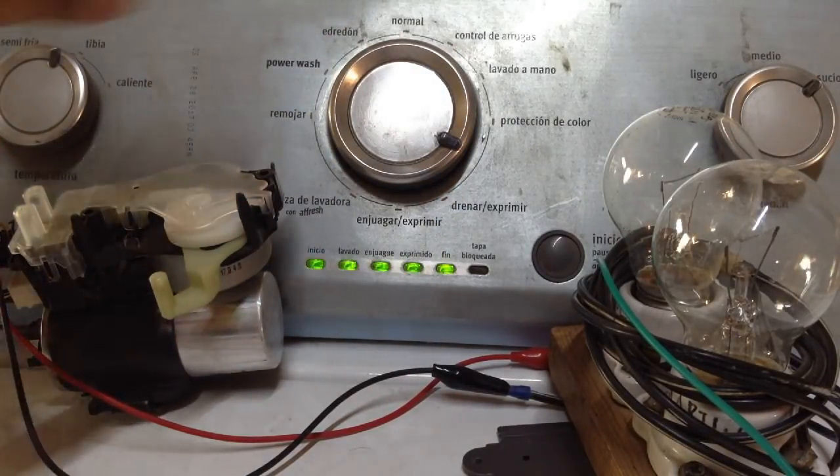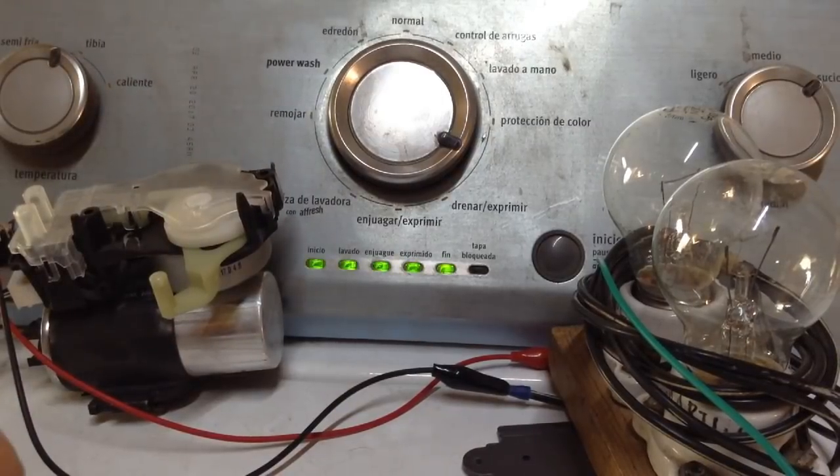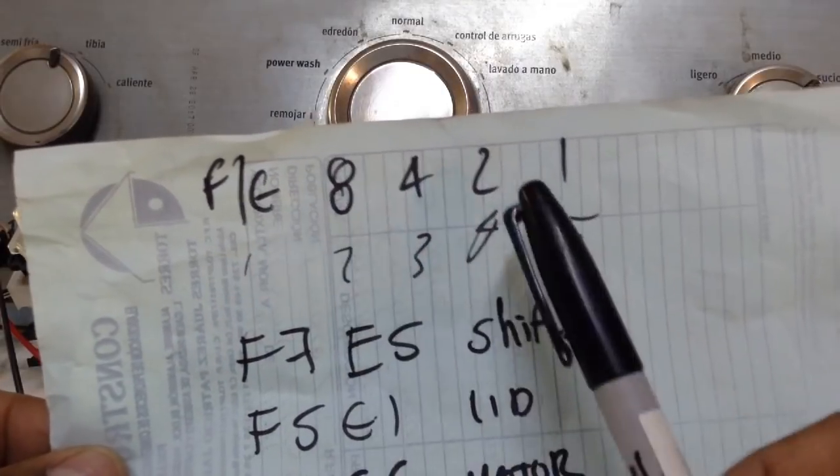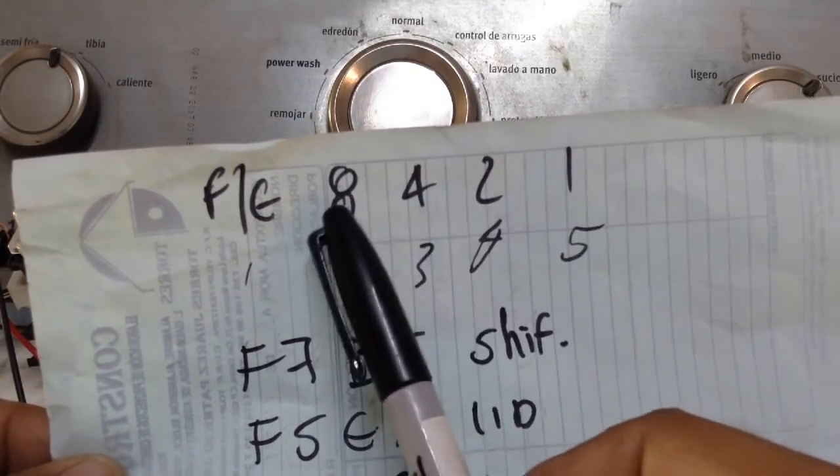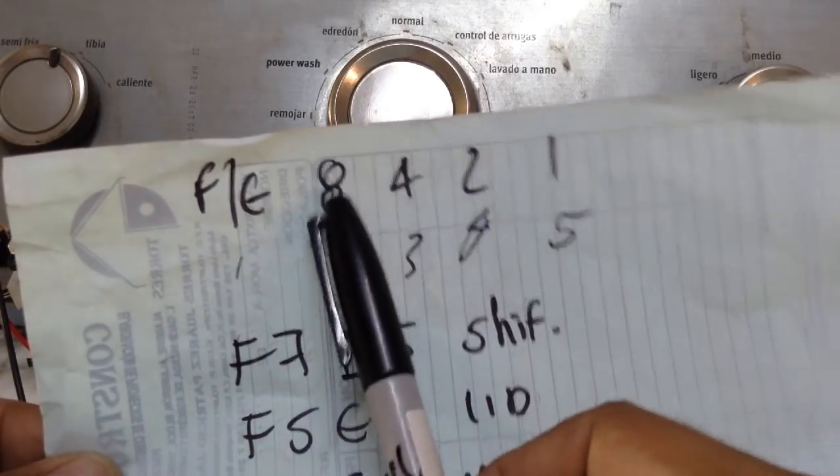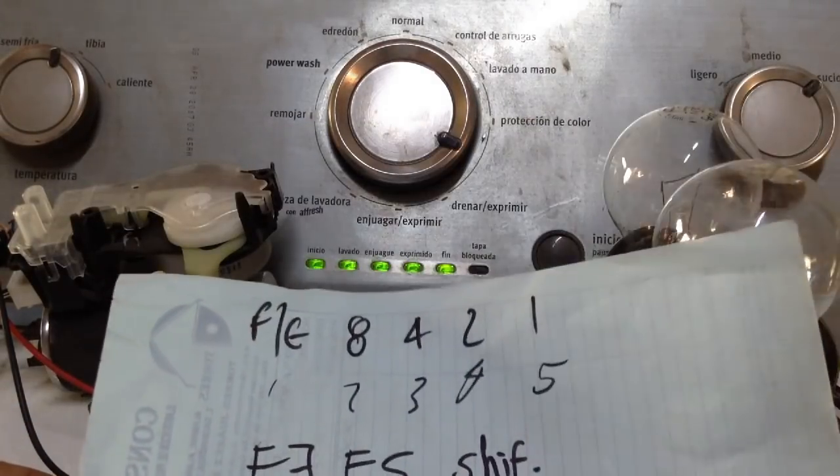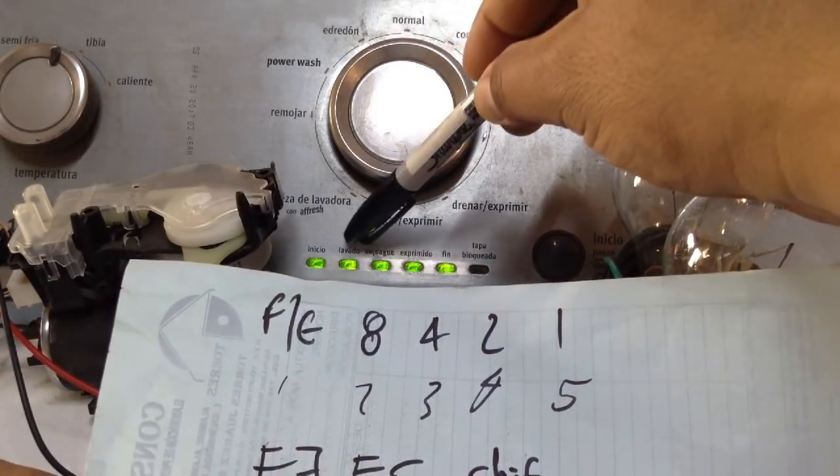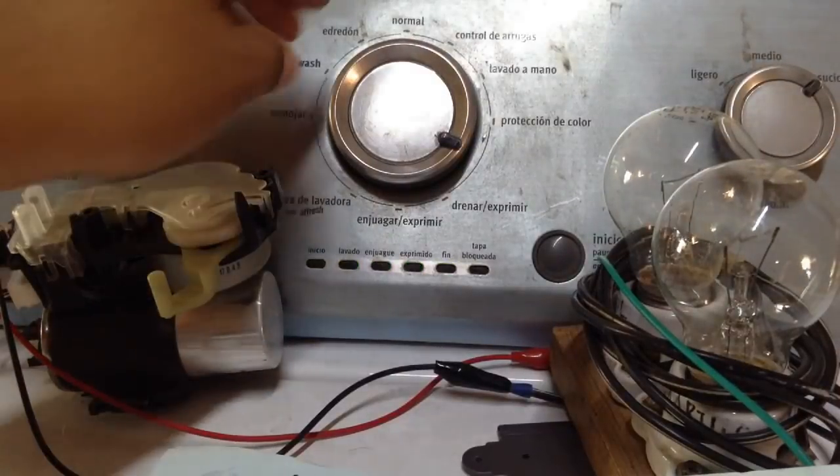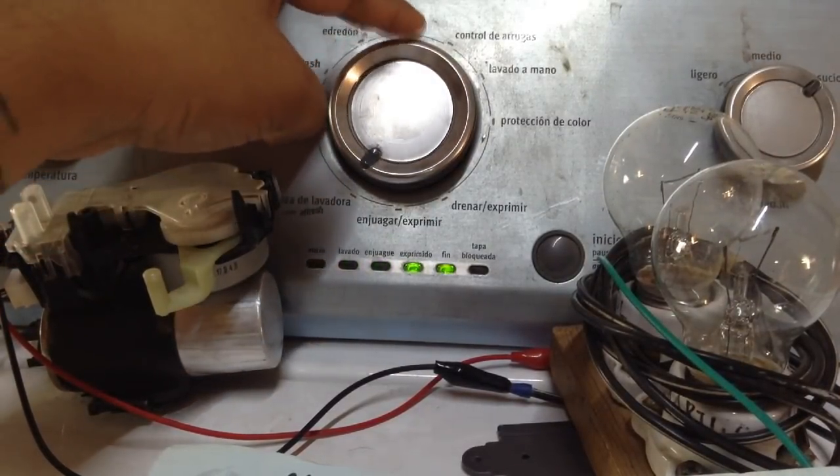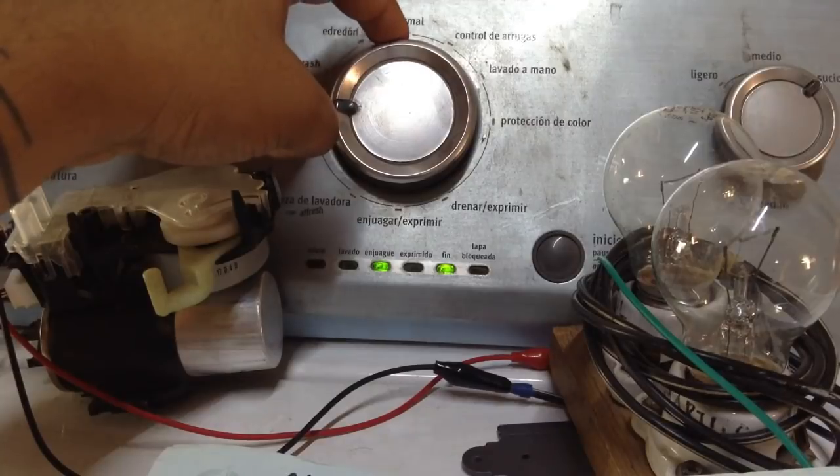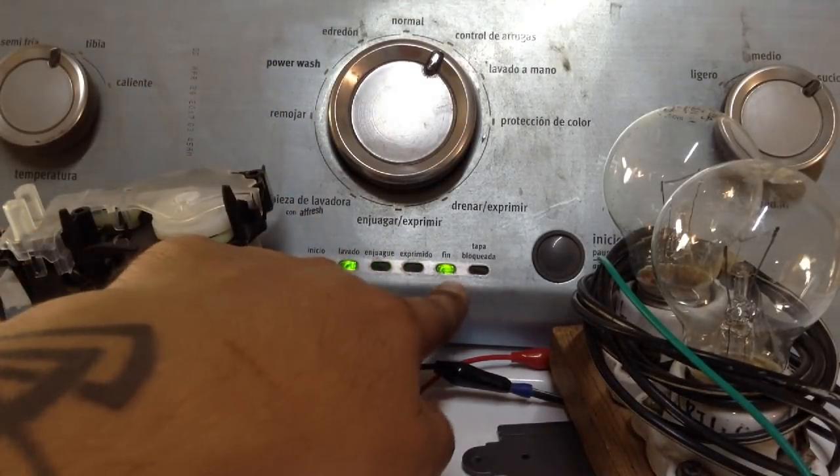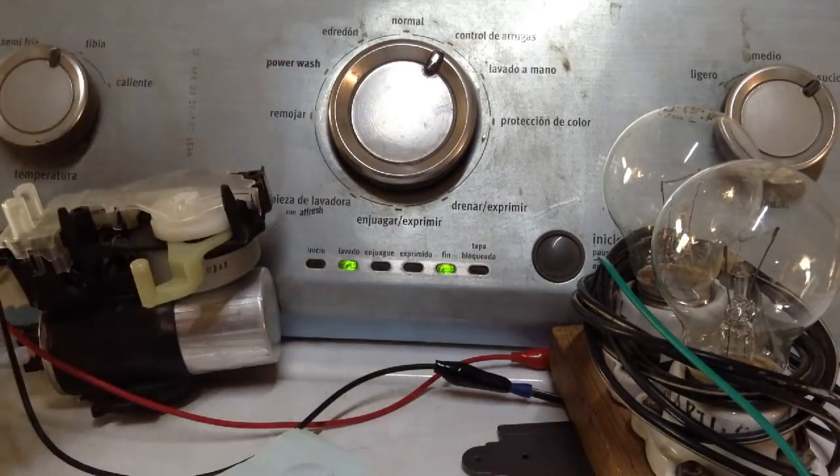Ahora vamos al menú número 9. Para el menú número 9 es la sumatoria de los dígitos arriba que nos den 9. 8 y 4 no da 9, 8 y 2 da 10, 8 y 1 da 9. Es decir, vamos a encender este y este. Vamos a darle vuelta a la perilla hasta el dial. Menú 1, 2, 3, 4, 5, 6, 7, 8, menú 9. Es 8 más 1, 9. Vamos a ingresar.